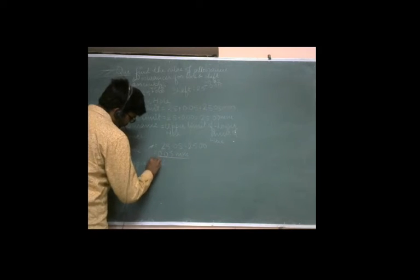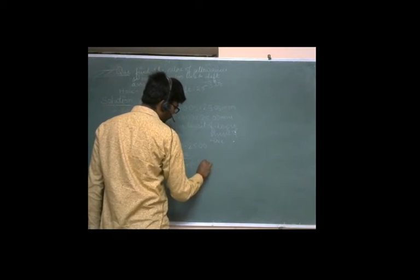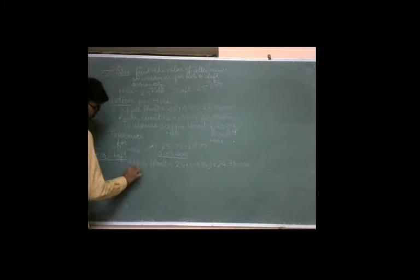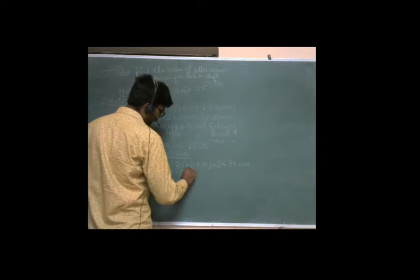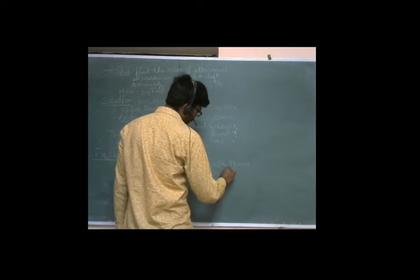We are talking about the shaft. What will our upper limit be? For the shaft it will be 25 plus upper deviation of minus 0.02. If you add it, then it will be 24.98 mm. If we are talking about lower limit for the shaft, it will be 25 plus minus 0.05, which gives us 24.95 mm.